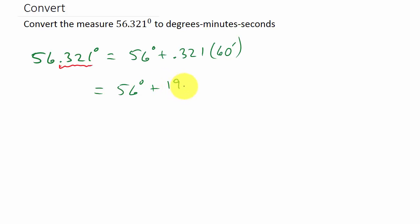So that is 56 degrees, 19 minutes, plus—and then we take the decimal part of the minutes and convert that to seconds.